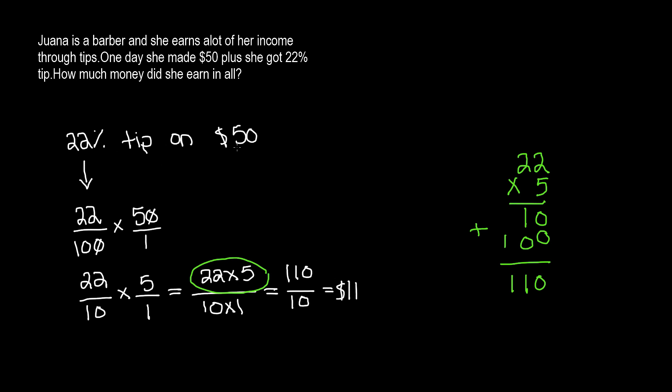So 22% tip on $50 is going to be $11. But wait, we're not done here. We still need to add this amount to our original amount. So that's $50 plus $11, which gives us $61.